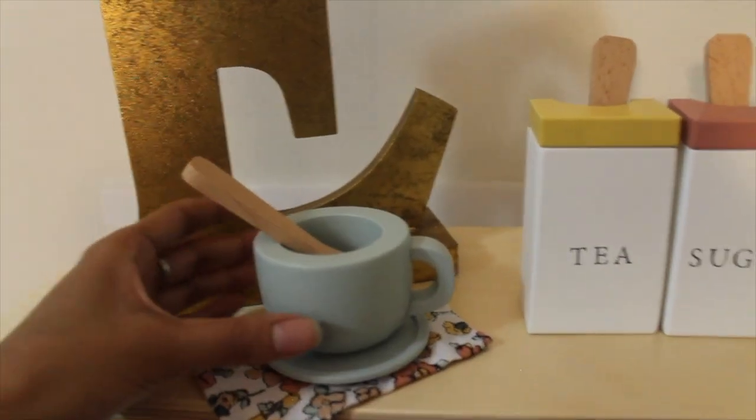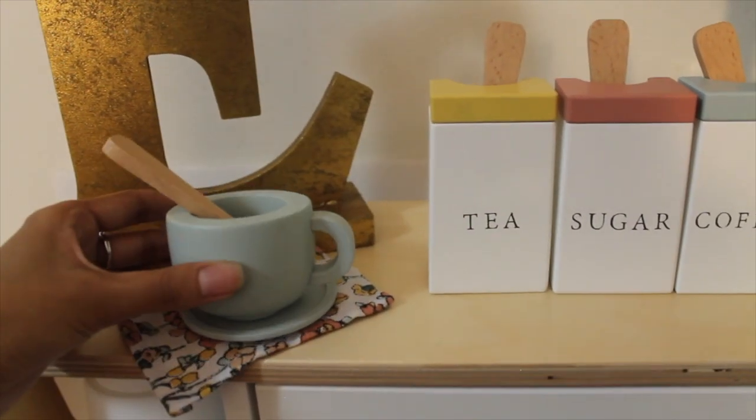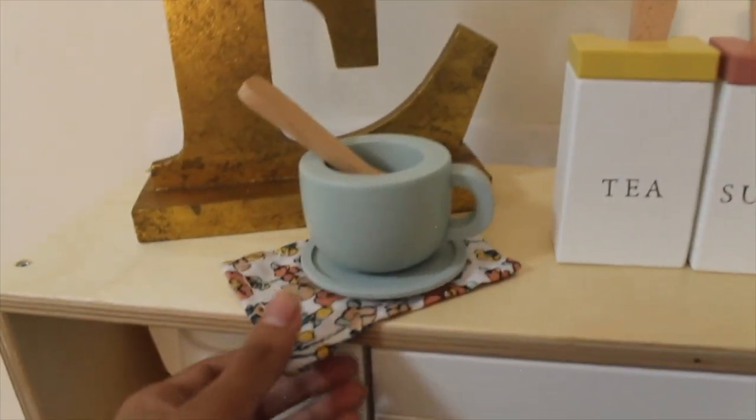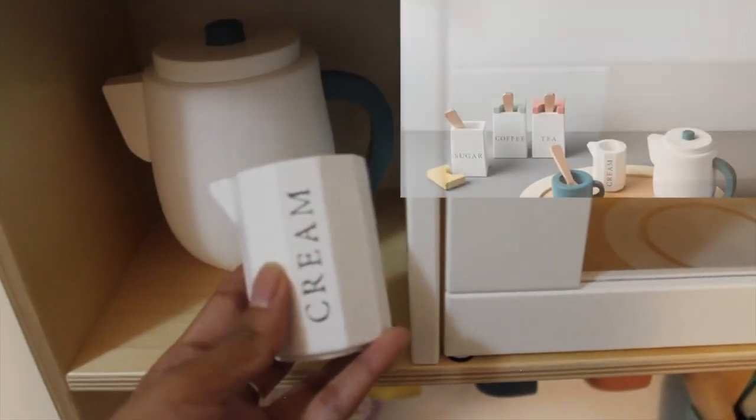They also go along with this tea cup. There's four of them. And they come with a little napkin and it's really pretty floral prints. Also in that set is a little cream container and a little mug.